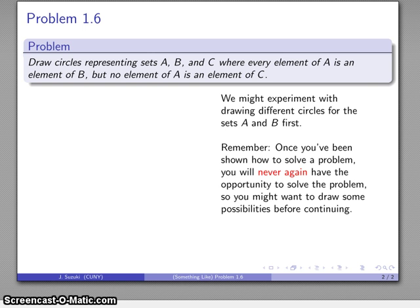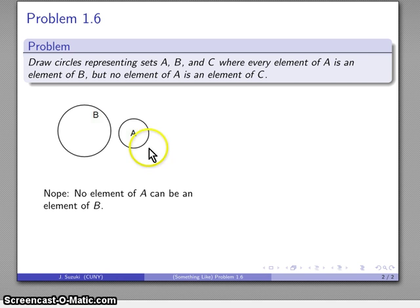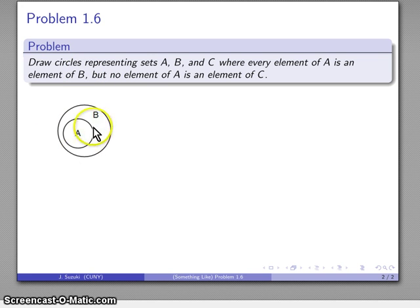Maybe I'll draw some circles. Well, that doesn't work. If I draw the circles this way, some elements of A might not be elements of B, and I need every element of A to be an element of B. Maybe I'll draw the circles this way, but again this doesn't work because no element of A can be an element of B. How about this? Here everything in A has to be in B as well. Every element of A is an element of B. That's exactly what we want.